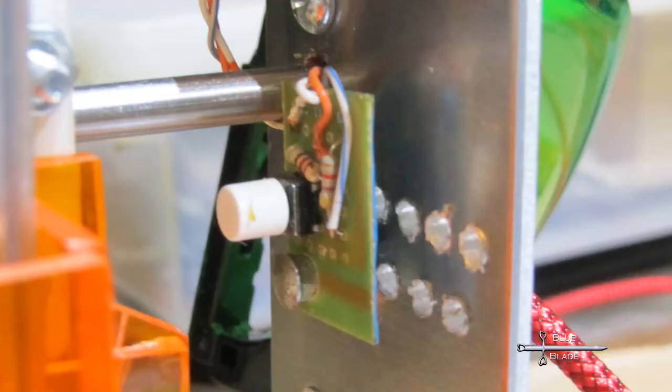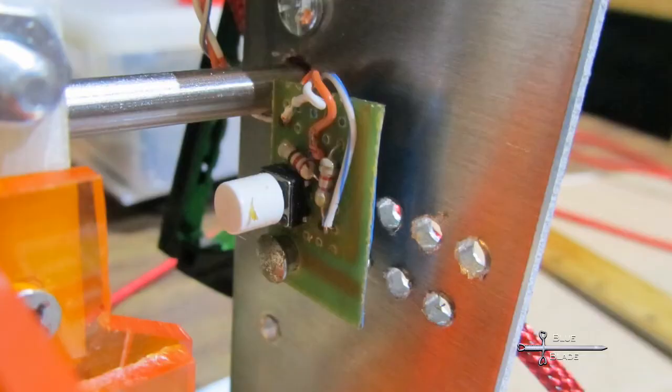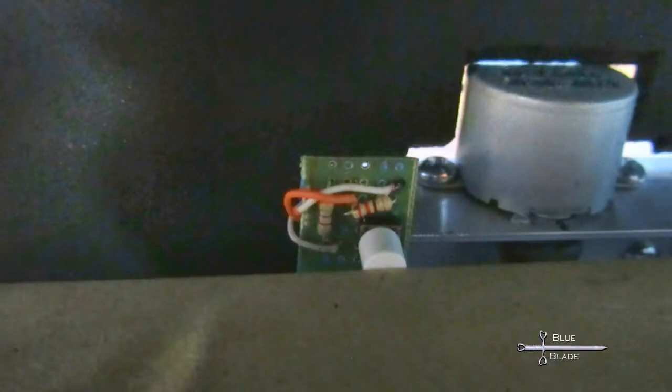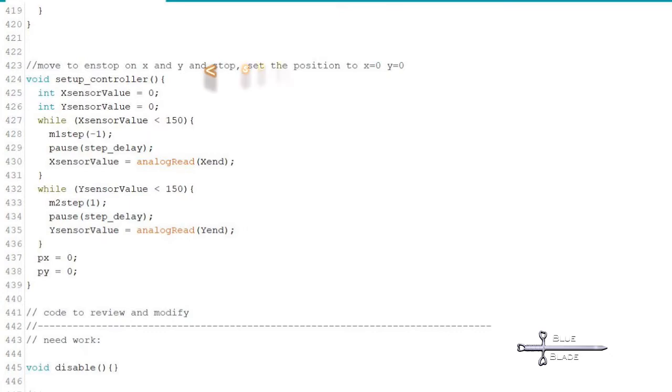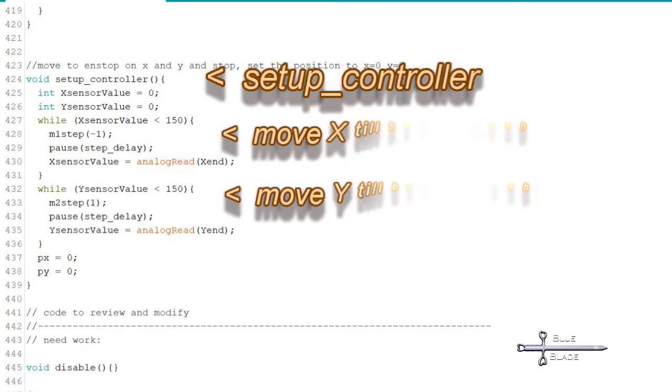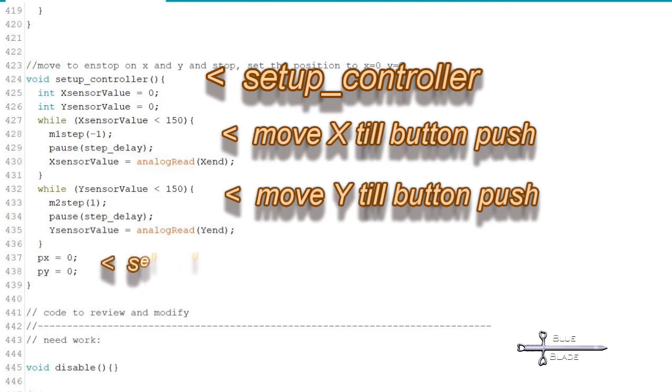To calibrate 0,0, I added two end-stop switches. These are just simple buttons with a limit resistor and a pull-down resistor connected to pins A4 and A5 on the Arduino. When pressed, the Arduino will read a voltage higher than 0. To set the 0,0 position on startup, I created a setup controller function. This simply moves the X and Y axis back a step until it detects the button pushes. Then it sets that position as 0,0.